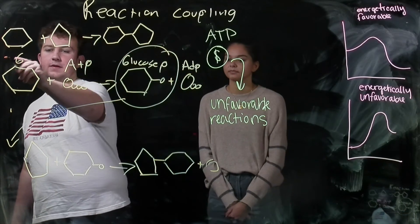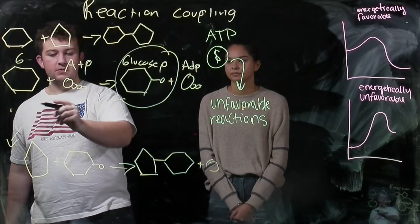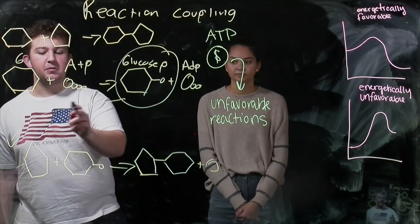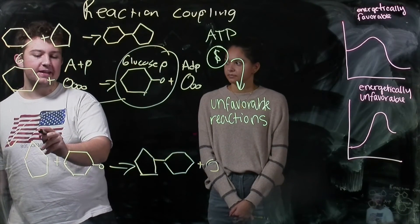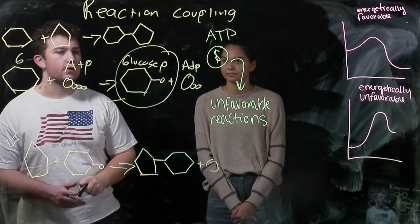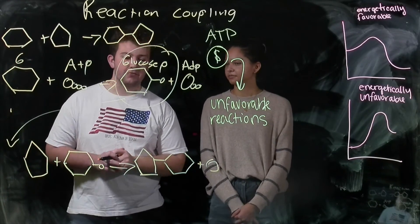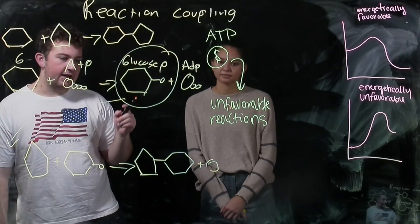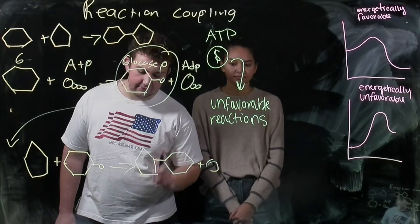Now, this reaction here is energetically favorable, so it occurs naturally only with the input of ATP, and this reaction here is not nearly as energetically unfavorable as the original reaction of trying to combine fructose and glucose to make sucrose. So this is called reaction coupling, and it's powered by ATP hydrolysis.